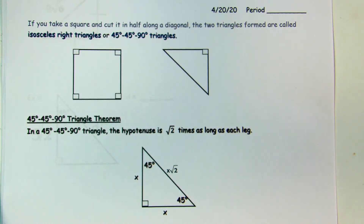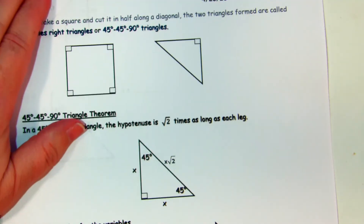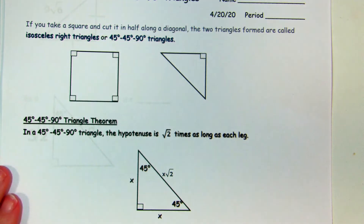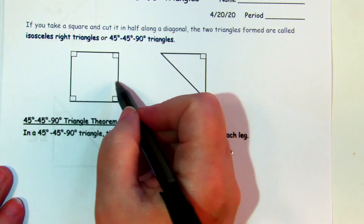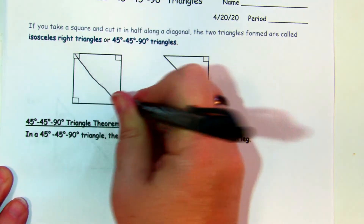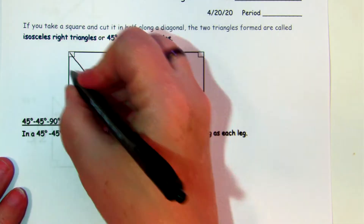Today we're going to learn about 45-45-90 triangles, called special right triangles. There are two kinds of special right triangles and the first ones are 45-45-90 triangles. If you take a square — four right angles, four congruent sides — and cut it in half along the diagonal, the two triangles formed are called isosceles right triangles or 45-45-90 triangles.